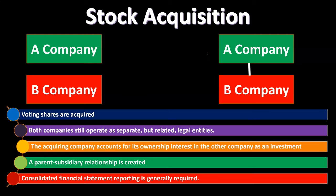A parent-subsidiary relationship is created, and consolidated financial statement reporting is generally required. When you record the transaction of the purchase, company A records an investment in company B on its books. For financial reporting, you then have to report this as consolidated financial statements — taking the parent-subsidiary relationship, if there's more than 50% ownership, and reporting it as if it's one entity, as transparently as possible to readers.